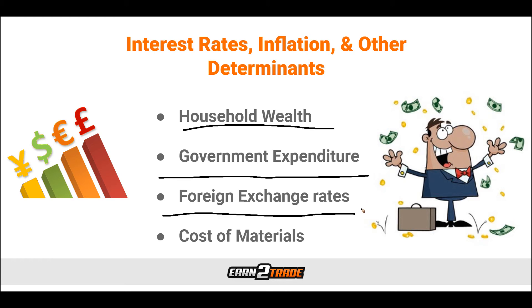Then we have foreign exchange rates. Currencies very rarely move in the same direction, and as a consequence, the cost of goods to foreign buyers tends to be fairly volatile across different settings. The formula for calculating aggregate demand does take net exports into account. Therefore, changes in the value of foreign exchange currencies can have an impact on the aggregate demand curve. If, for example, the British pound is weakening against the U.S. dollar, then U.S. consumers would be more attracted to U.K. imports. On the flip side, if the pound is strengthening against the U.S. dollar, that would make U.S. imports more attractive to U.K. buyers.